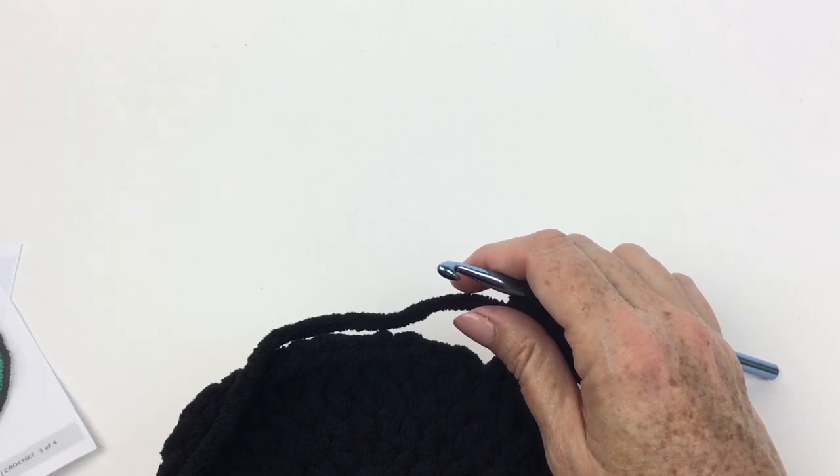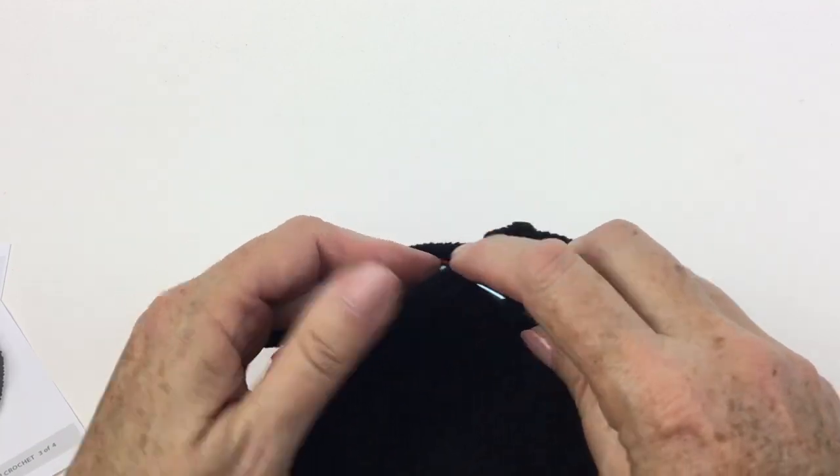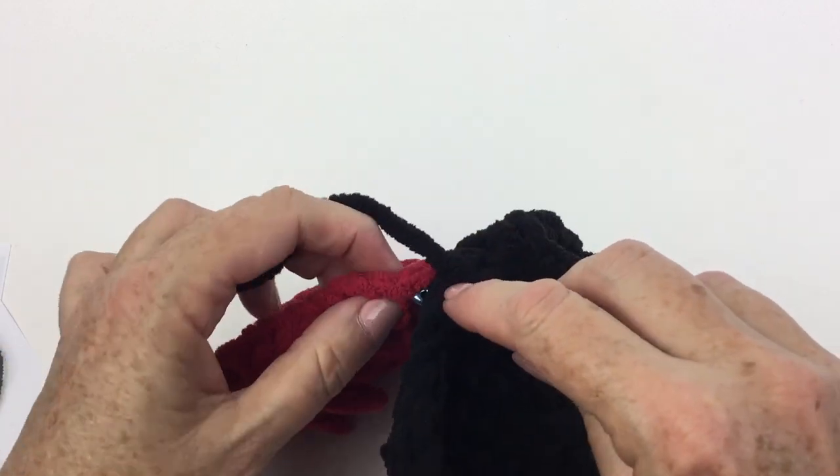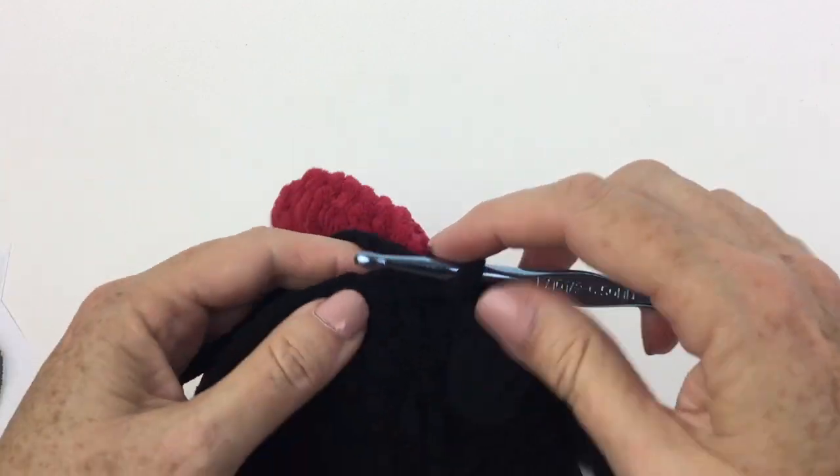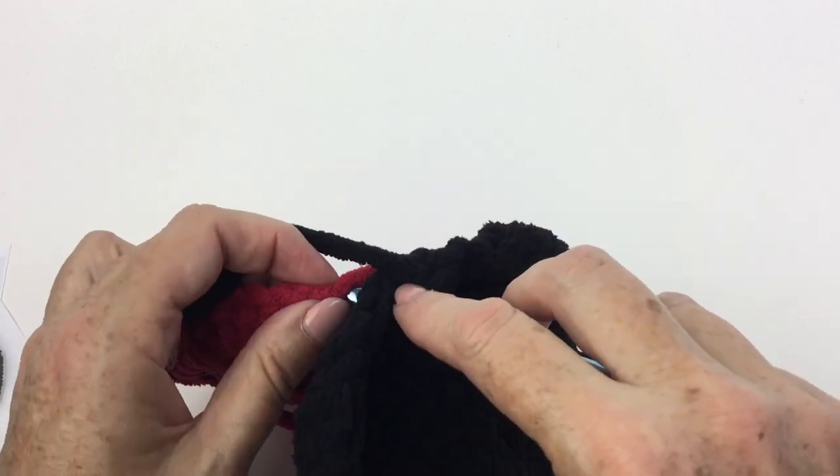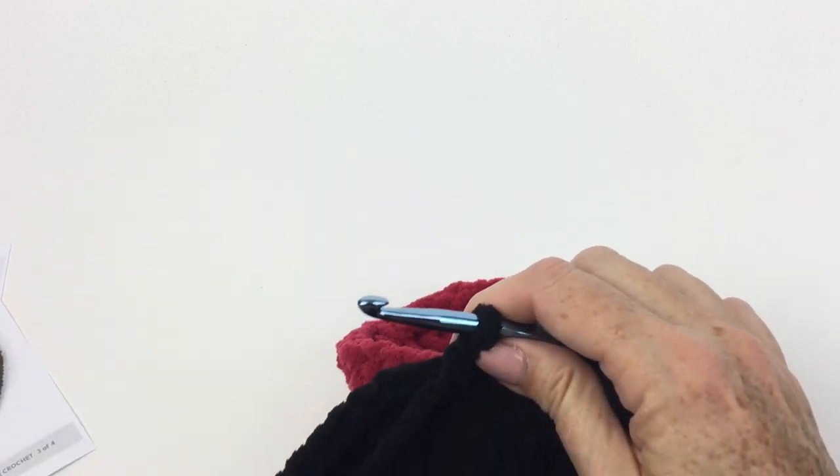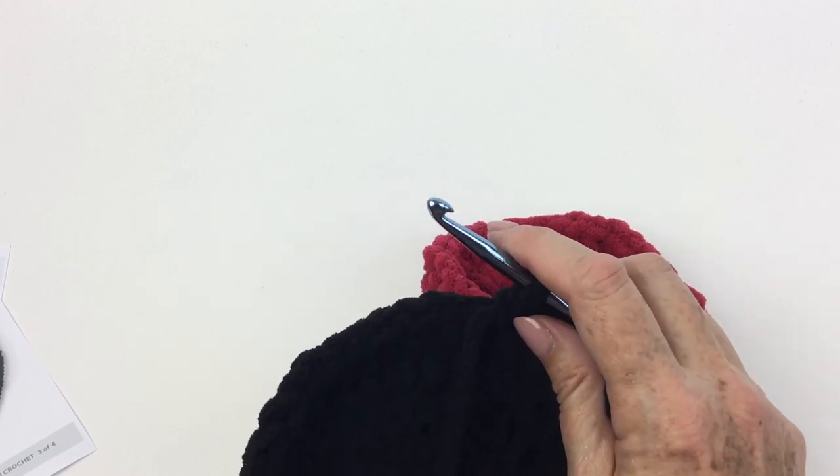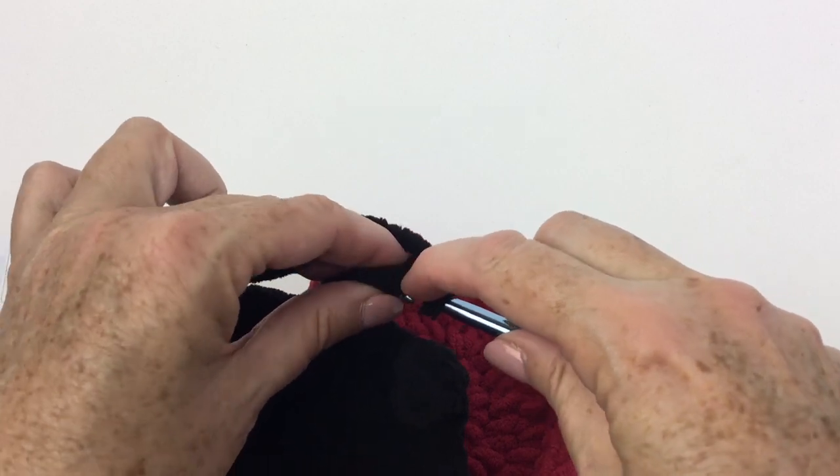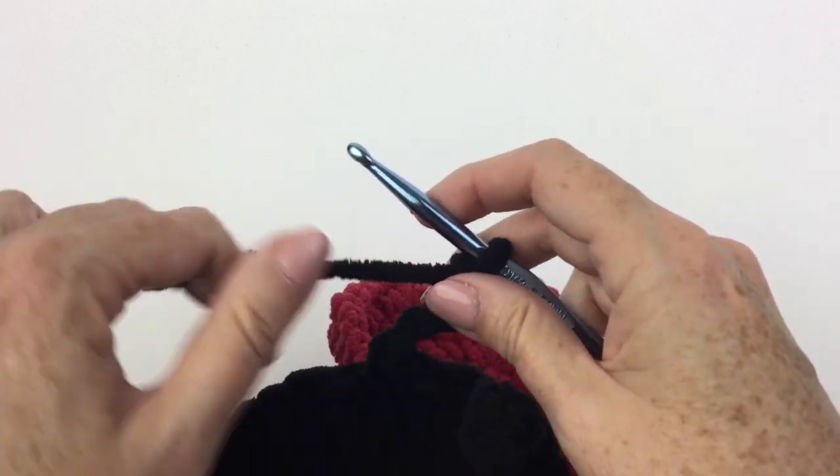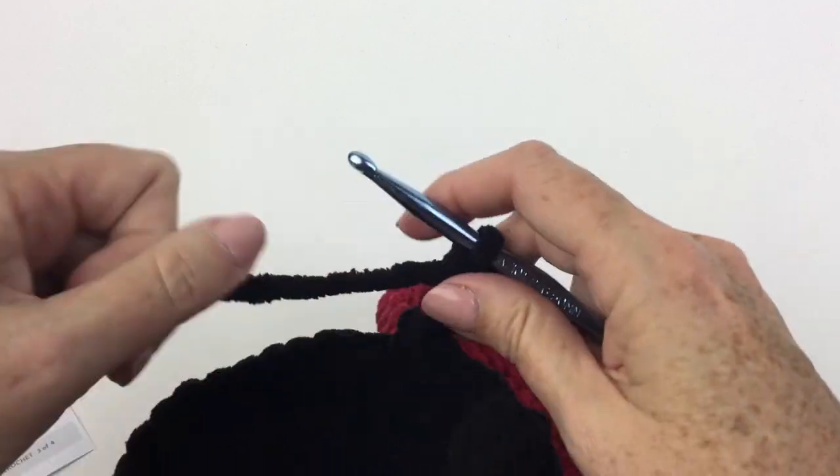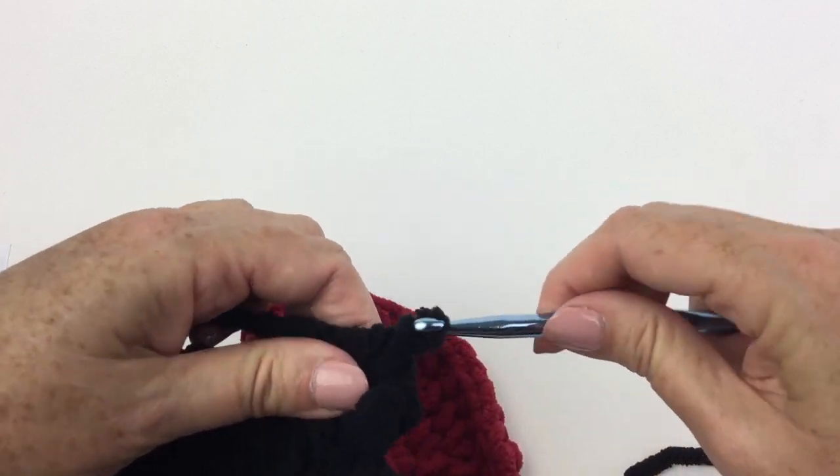And then we're going to single crochet in each of next four single crochet. And when we do that, remember we're back to working through both thicknesses. One, two, three, four. And now I'm going to do that same thing. I'm going to chain four. Again, nice and loose. One, two, three, four. Single crochet in second chain from hook. One. And then in each of next two. Trying too hard. One, two. And there's my second little leg.